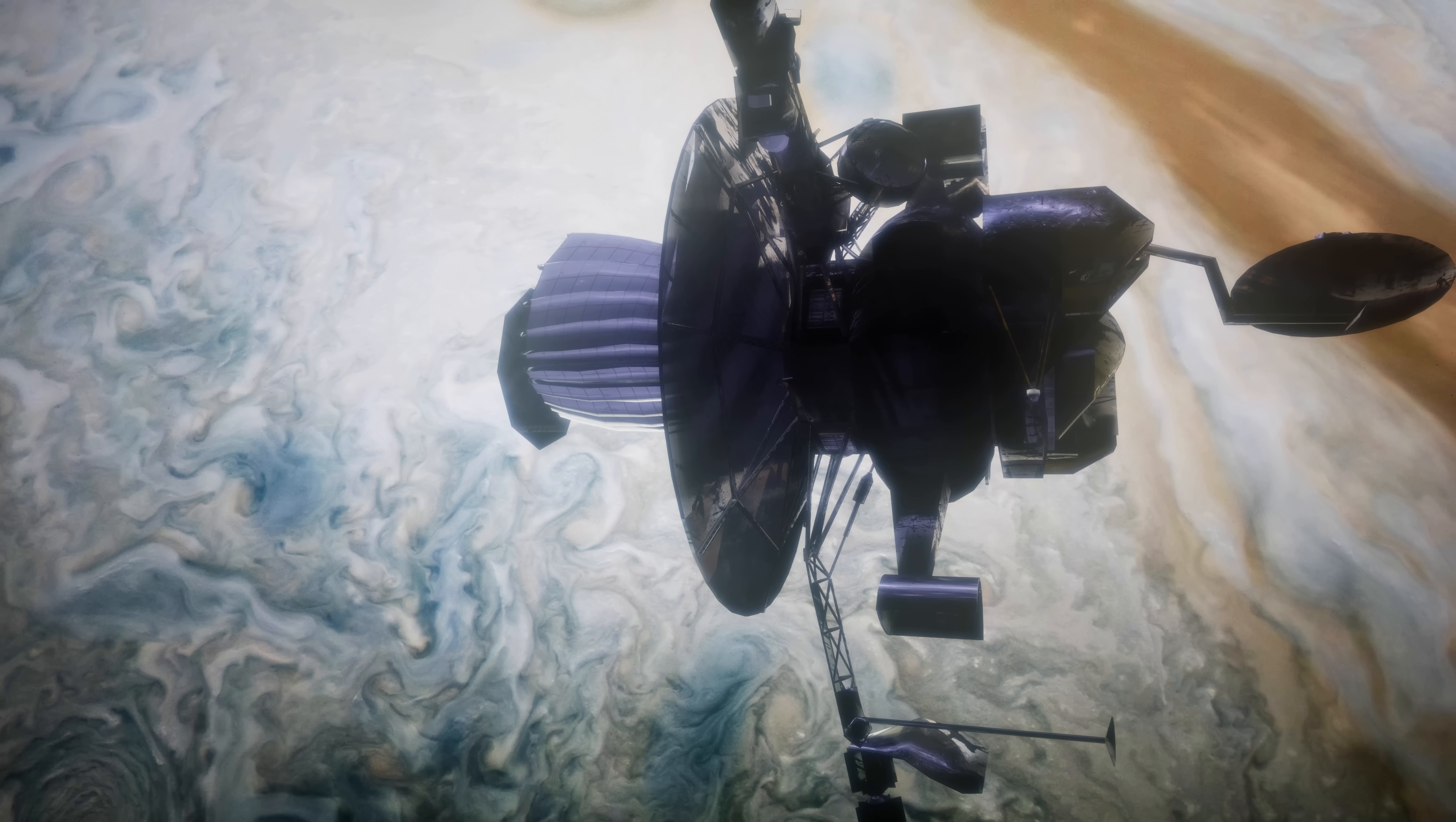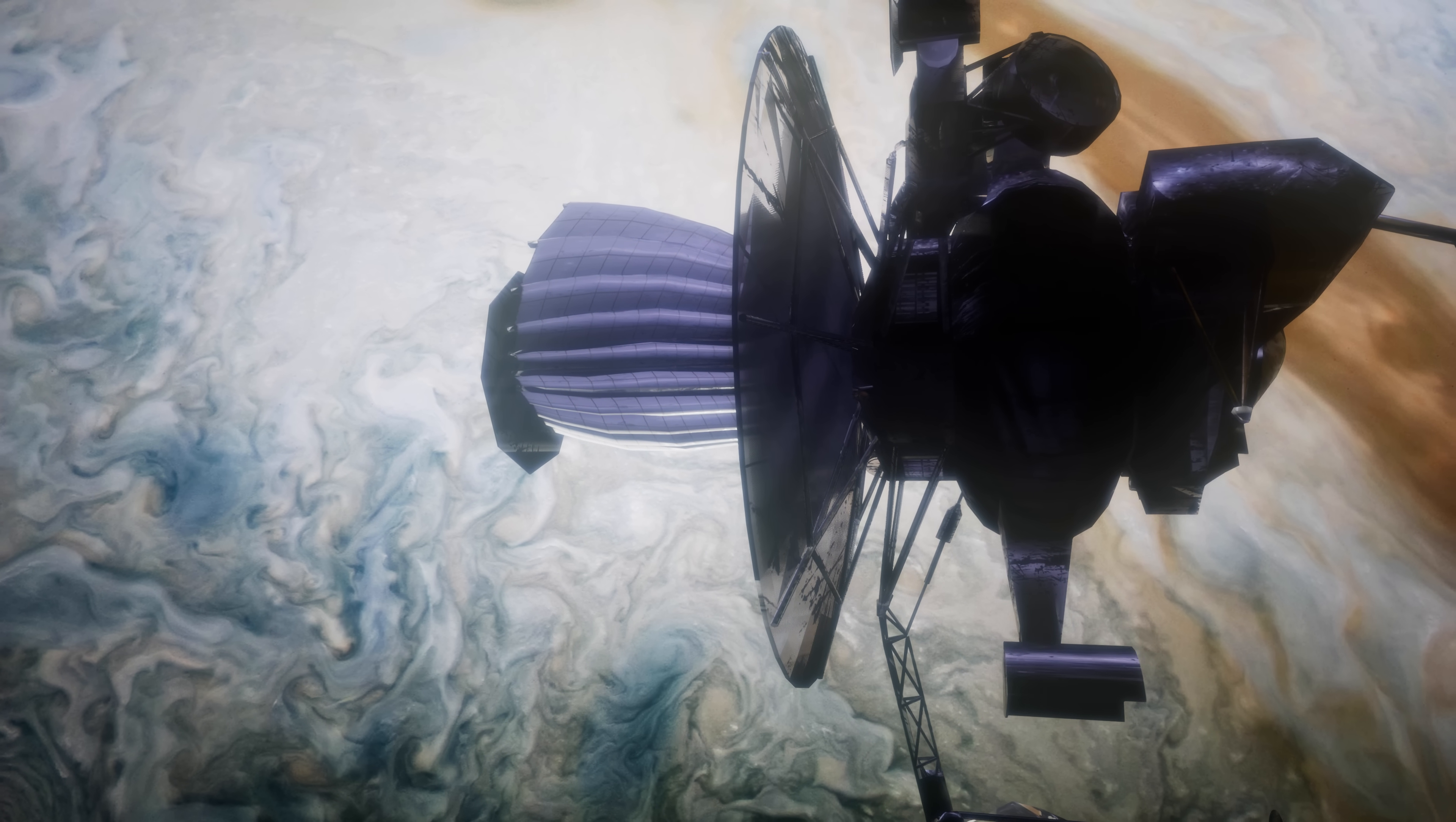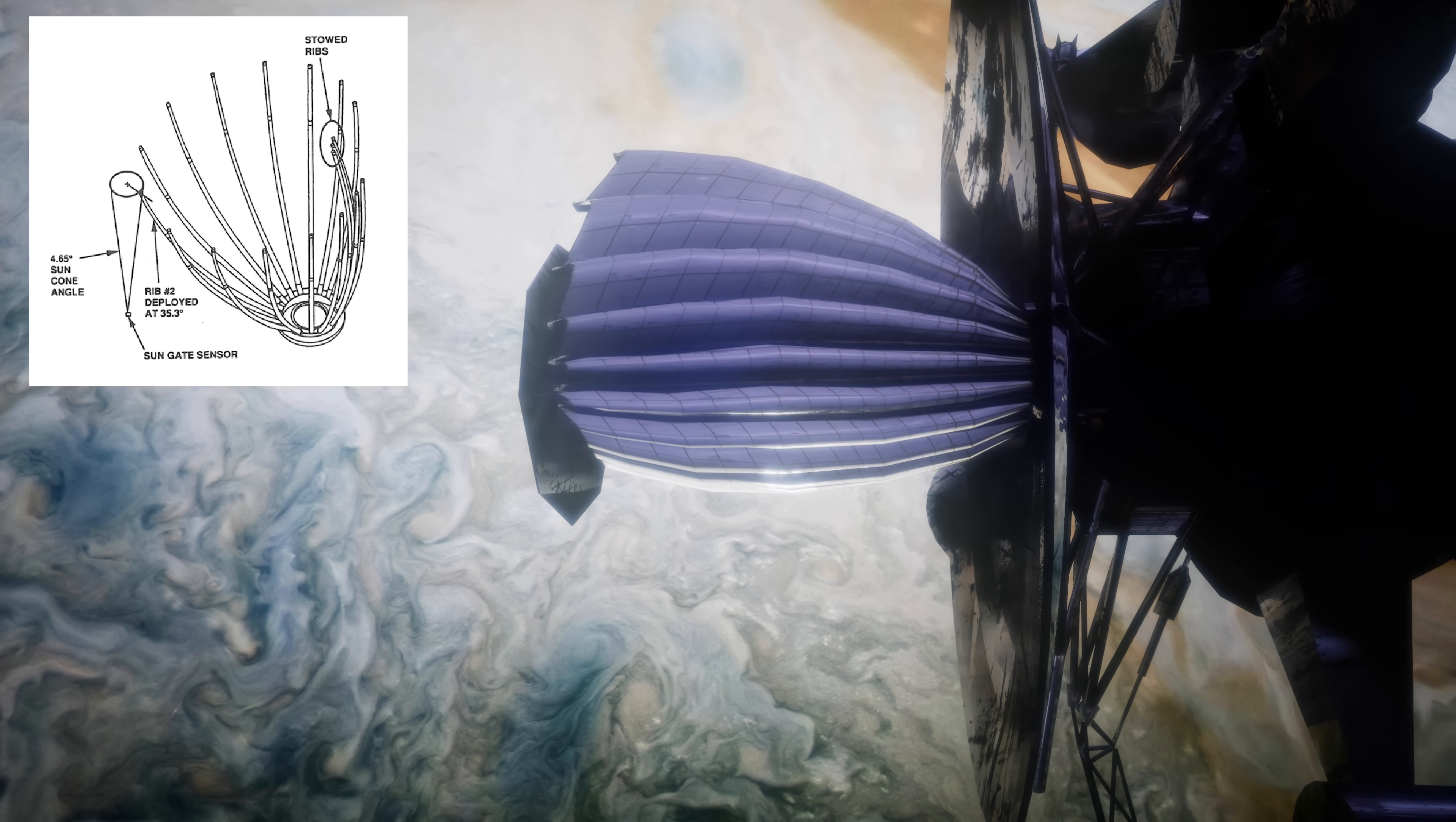In April 1991 the Galileo spacecraft was supposed to open its high gain antenna, looks a bit like an umbrella, but three ribs of that umbrella had cold welded to the body of the spacecraft and so it couldn't open.